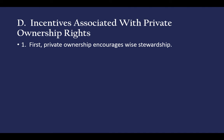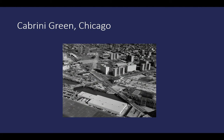Several incentives are associated with private ownership rights. First, it encourages wise stewardship — if I own it, I'm motivated to take good care of it. A good example of what happens when people don't own things is Cabrini Green in Chicago. This whole complex has mercifully been torn down, but it was a case study in public housing gone bad — run by gangs and drugs, a complete hell on earth. The people did not own the property and had no motivation to manage it, and it just did not work out.